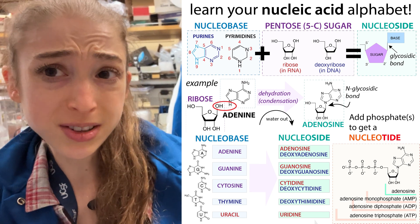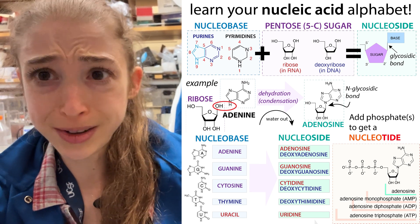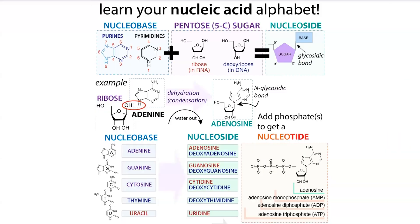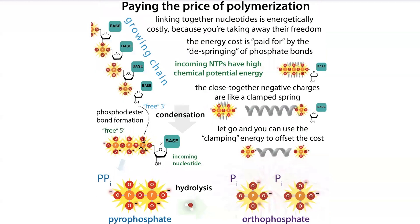How do you decide whether it's nucleoside or nucleotide? A nucleoside is a nucleobase with a side of sugar. If you add on a phosphate group or groups, you get a nucleotide — with a T, think energy, because those phosphate groups are going to provide the energy needed to piece together these DNA or RNA letters.